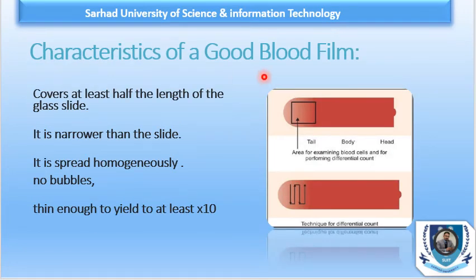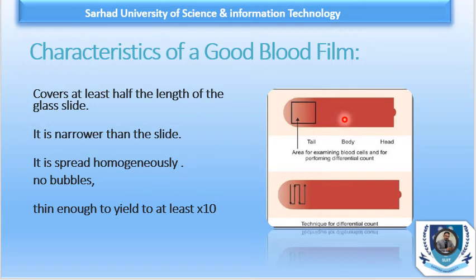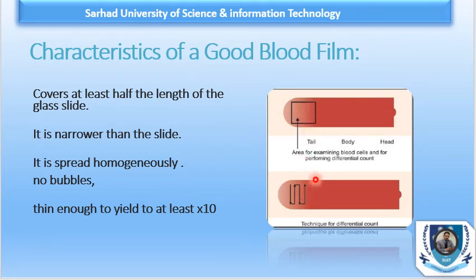The characteristics of a good blood film are: it should cover at least half the length of the glass slide, be narrower than the slide, spread homogeneously, and should not have any bubbles, streaks, troughs, or holes. It should be identifiable into head, body, and tail. The head is near the drop where there are a lot of cells and is not the best area. The body is the middle area, and the tail is the thin terminal part — the best or ideal place for morphology is near the tail.